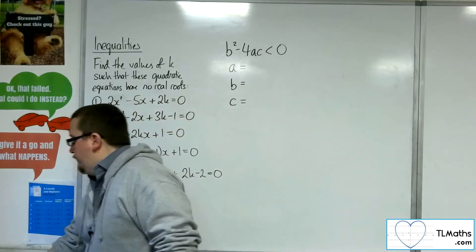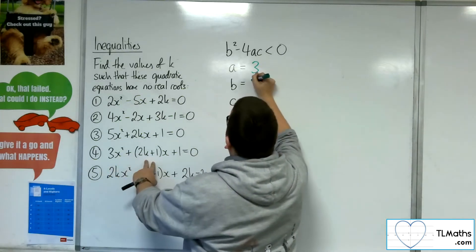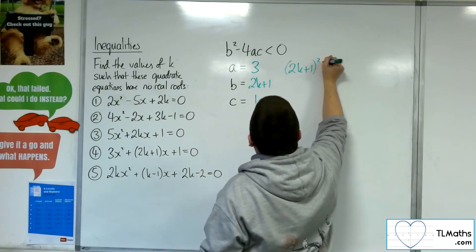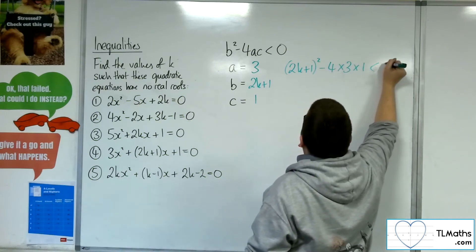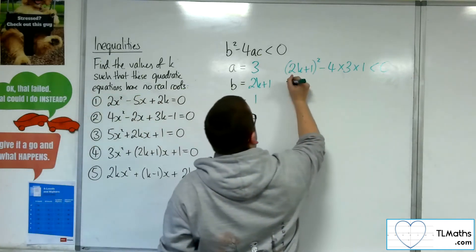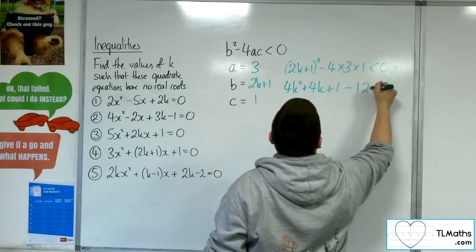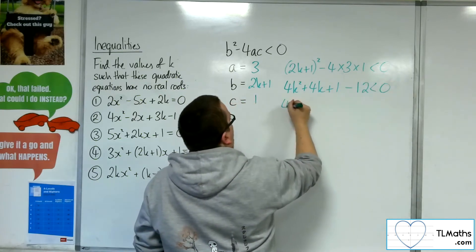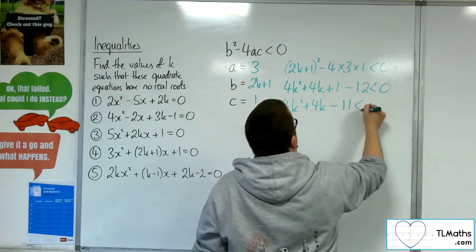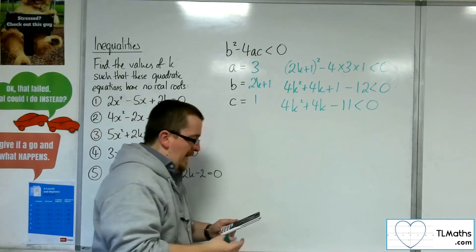Let's have a look at number 4: 3x squared plus (2k plus 1)x plus 1 equals 0. So A is 3, B is 2k plus 1, and C is 1. We're going to have B squared take away 4 lots of A times C, and that's got to be less than 0. Expanding the bracket gives 4k squared plus 4k plus 1, then taking away 12, so we have 4k squared plus 4k minus 11 less than 0.